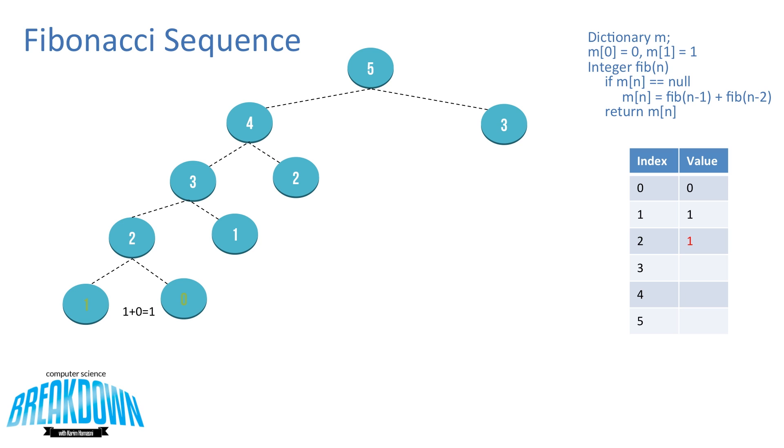Now, as you can see in the table, at index 2, we can now fill in the value of 1. We can now go back up the tree, and now that we have a value at index 2 and index 1, we can now calculate what the value is at fib 3. As you can see, it's 2, so we can now fill that into our table and go even further up the tree.